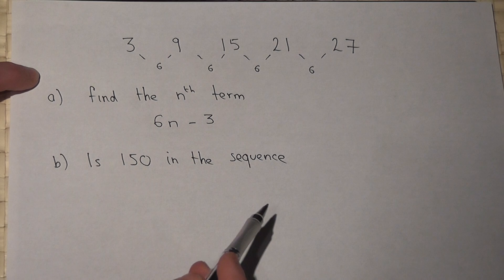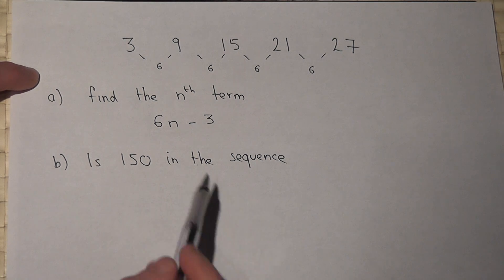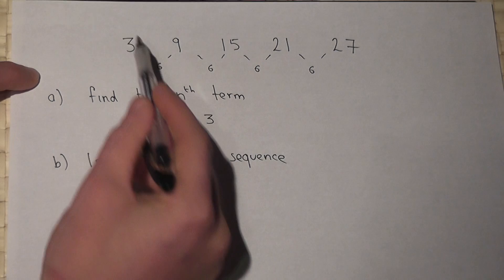6 take 3 is 3. And to check this, if n is 1, 6 times 1 is 6, take 3 is 3.